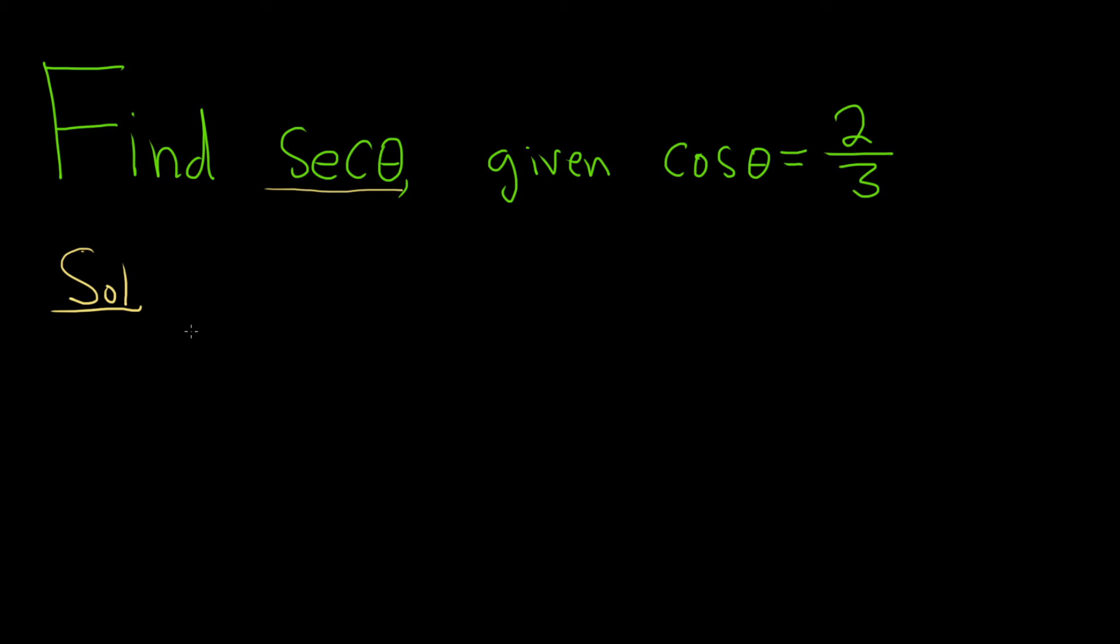If you wanted to show some work, you could do the following. Secant of theta, by definition, is equal to 1 over the cosine of theta.